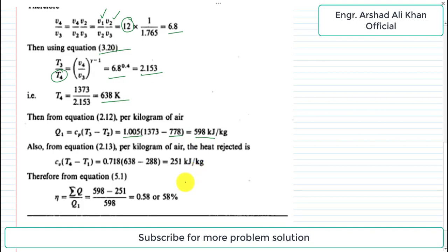Now find the heat rejection during cooling. This is the heat rejected in the isochoric or constant volume process. Q equals Cv times (T4 minus T1). Cv for air is 0.718 kJ per kg per K. Q equals 0.718 times (638 minus 288), which equals 231 kJ per kg.